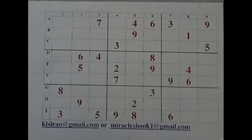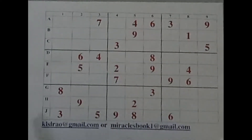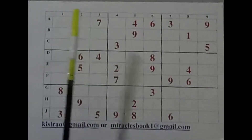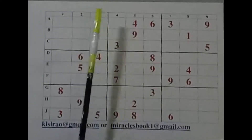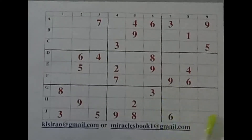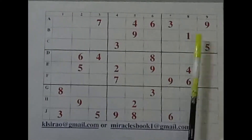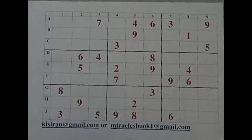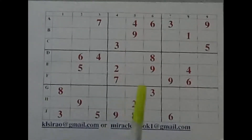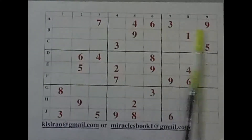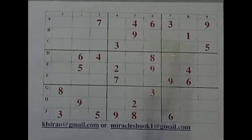Here we are with Mr. Vasanth Poskote's puzzle. There is nothing special about this except: in box number 1, we have only one number given, and box number 9 also has just one number given. Otherwise all other numbers are there. And incidentally, number 1 is given just once. So let's start with our regular method.